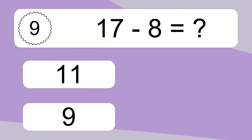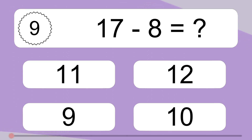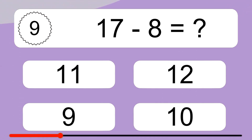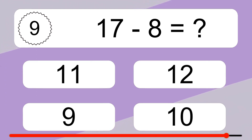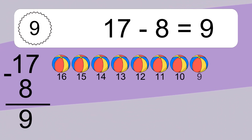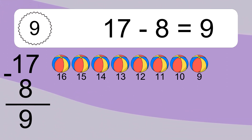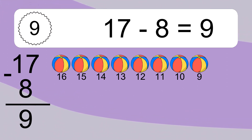17 minus 8 equals 9. Let's count it: 16, 15, 14, 13, 12, 11, 10, 9.